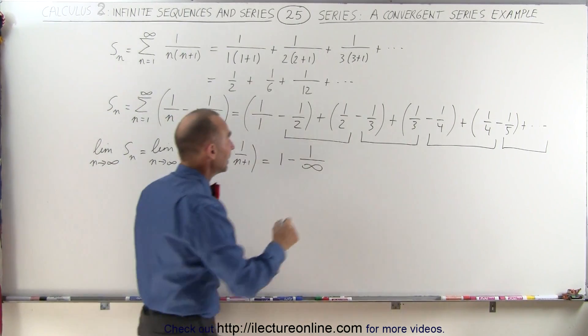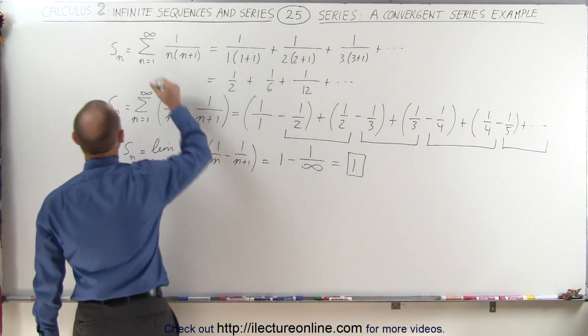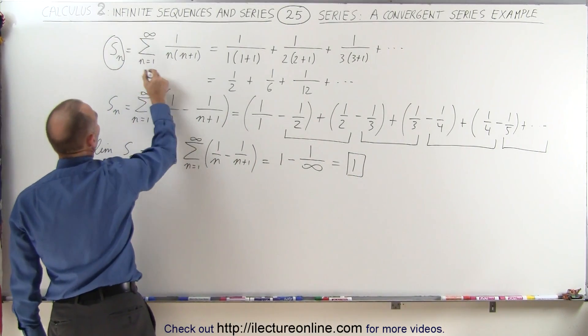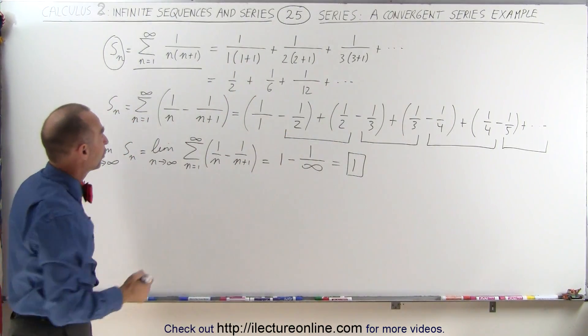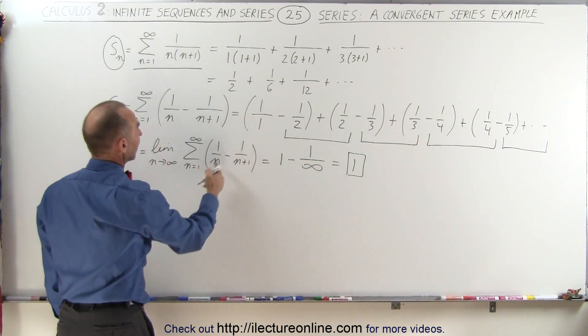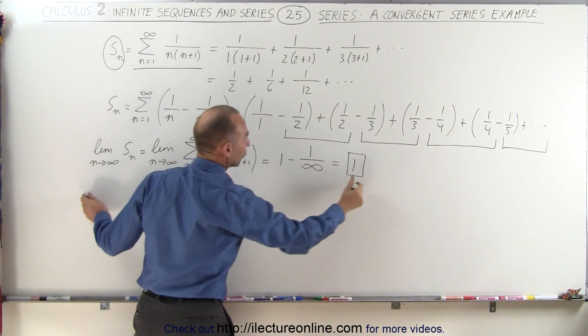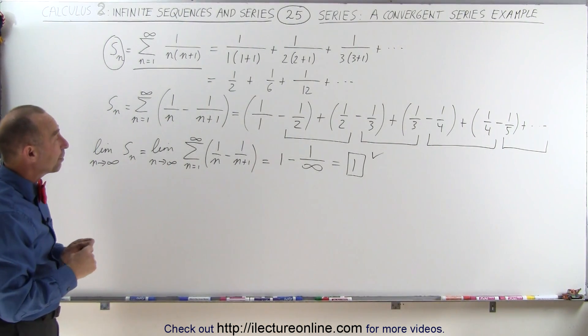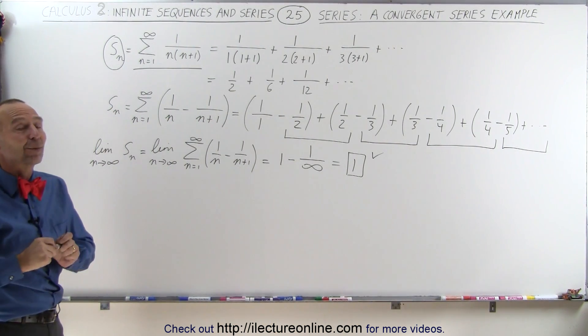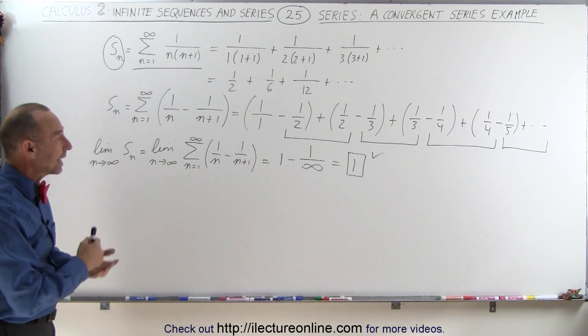Which means that the original sum, S sub n, which is defined as this, which can be written in this format, or which could be written in this format, that way we can show that this whole series sums up to a single number equal to 1. Not something you would expect, but that's the final result of this particular series. When you add up all the terms, you get 1. And that's an example of what you do when you have a convergent series.